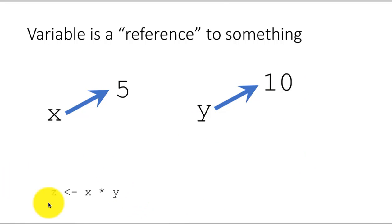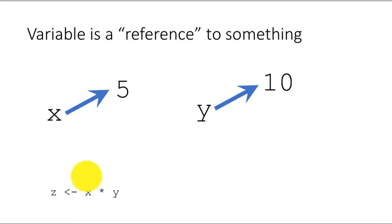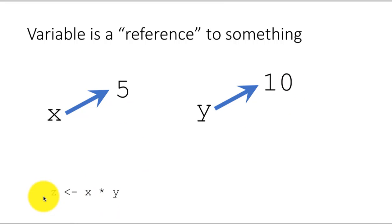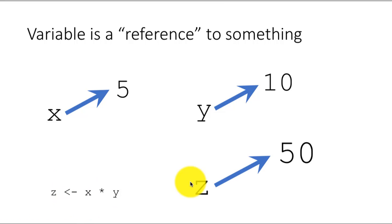So now when we execute an R statement like z is assigned the value x multiplied by y, what R is actually going to do is take a look at what x is pointing to, which is 5, take a look at what y is pointing to, which is 10, multiply 5 by 10 to get 50, and put the result into the variable z. In other words, after this, z is a variable that will be pointing to the value 50.